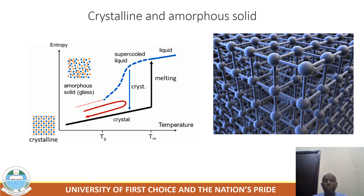For crystalline materials, the structural makeup is ordered in three principal directions. Such structural ordering is absent in amorphous materials such as glass.